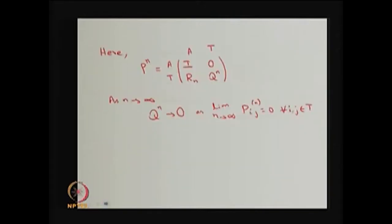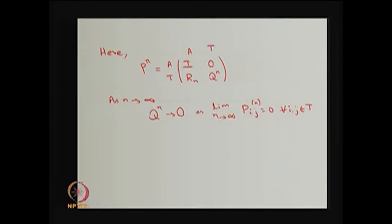If you go for the n-step transition probability: since the A-to-A block is an identity matrix, it remains the identity matrix. Whereas T to A is going to be a function of n, and T to T will be Q raised to power n. As n tends to infinity the system would not be in the transient states. Therefore, Q^n tends to the zero submatrix as n tends to infinity, and these probabilities go to 0 for all i, j belonging to T, the set of transient states.